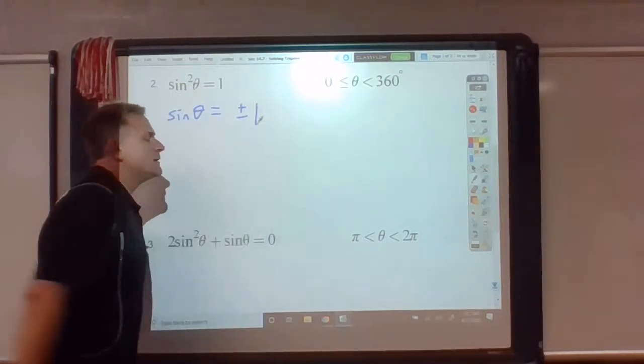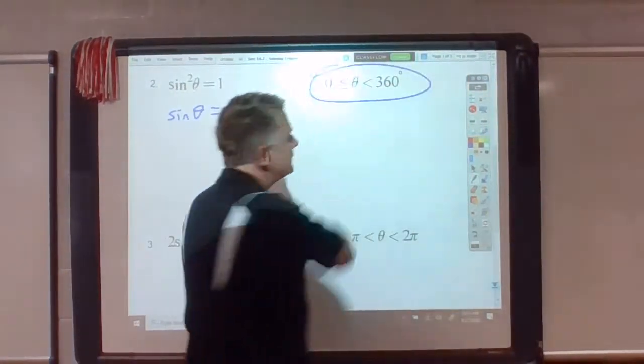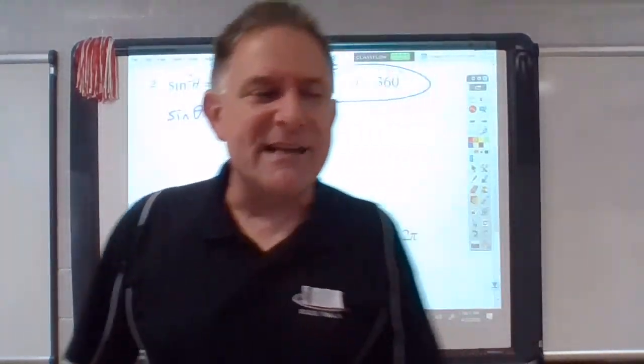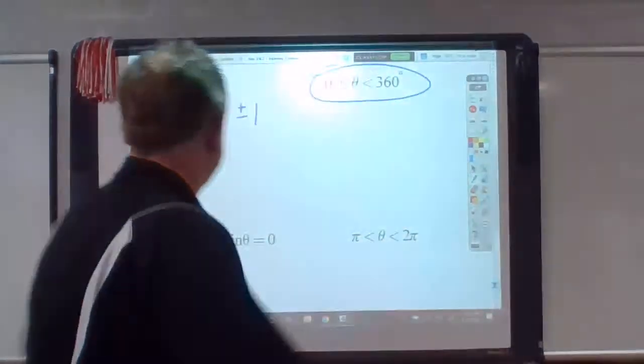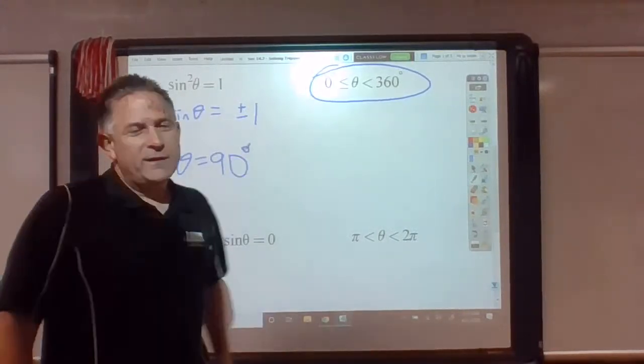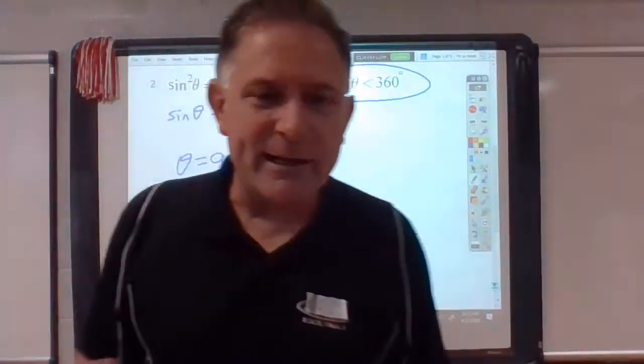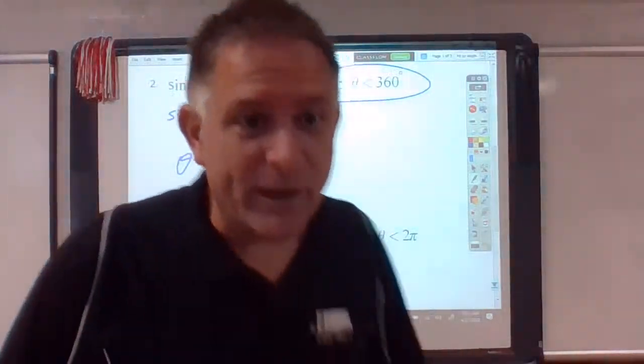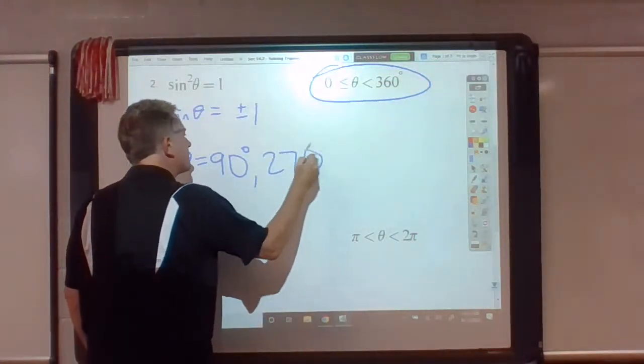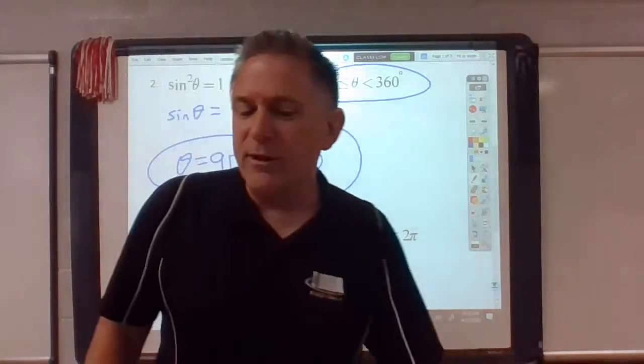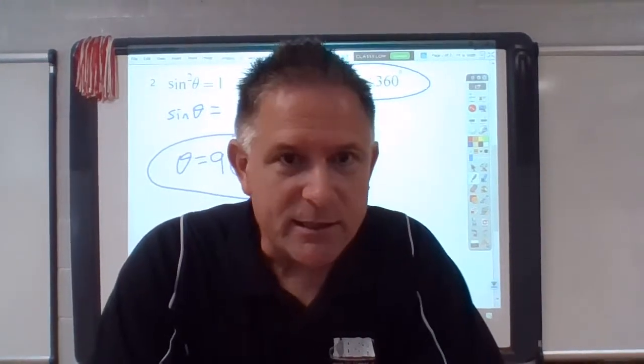When you square root both sides, you get sine equals plus or minus 1. The domain is 0 to 360. Where does sine equal 1? Where is the y-coordinate 1 on the unit circle? That's at 90. And where is sine negative 1? Where does the y-coordinate equal negative 1? Down at the bottom, right at 270. So we got two answers again — plug either one into the equation and you get something that's true.